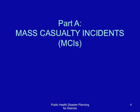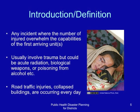In this session, we shall talk about mass casualty incidents. A mass casualty incident is any incident where the number of injured overwhelms the capabilities of the first arriving teams. They usually involve trauma but could be acute radiation, biological weapons, or poisoning from alcohol.